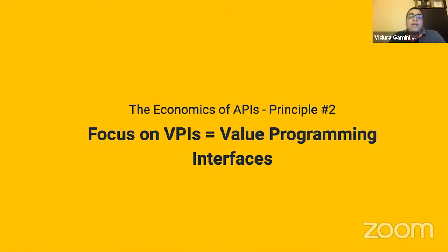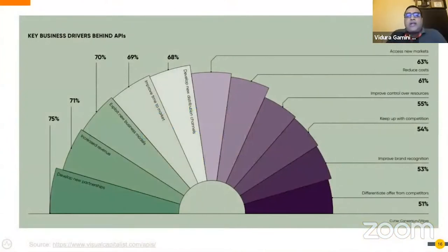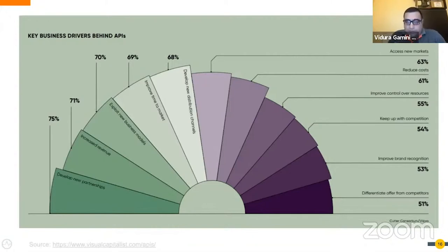APIs are the interface through which we deliver value to consumers — this was one of the key highlights in Nuan Dye's talk yesterday. When you come up with an API, as a principle, focus on the value it provides and treat them not just as application programming interfaces but as value programming interfaces. Look at APIs from a business perspective, because we often tend to only look at them from a technical perspective.